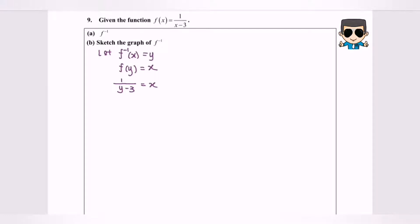My suggestion is to cross multiply, so we'll have 1 over x equals y minus 3. Rearrange: y equals 1 over x plus 3. As we know, y equals f inverse x, so finally f inverse of x equals 1 over x plus 3. This will become the inverse.